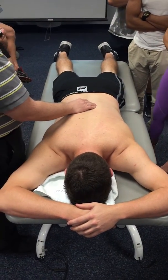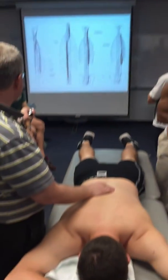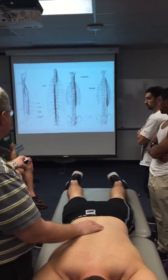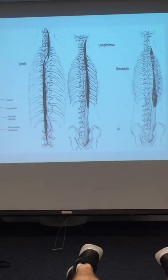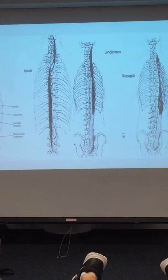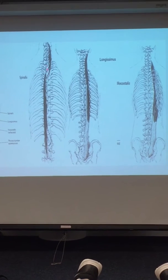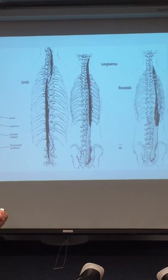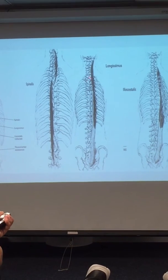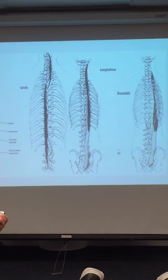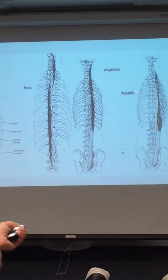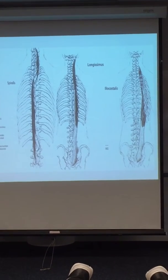What you'll notice in the picture is spinalis does terminate at L2. It does not go any further down and it is the most medial, generally attaching directly onto the spinous processes. It goes all the way up to T1, T2 — that region. Longissimus is a little more lateral, not as much on the spinous processes except at around T7, but attaching to the transverse processes of the thoracic vertebrae. And then more lateral still is the iliocostalis muscles.